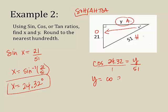Cross multiply. So, I have the cosine of 24.32 times 51. And I put that in my calculator. And I find out that y is equal to 46.47.